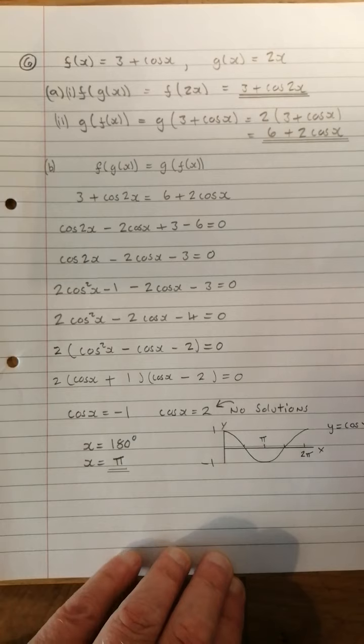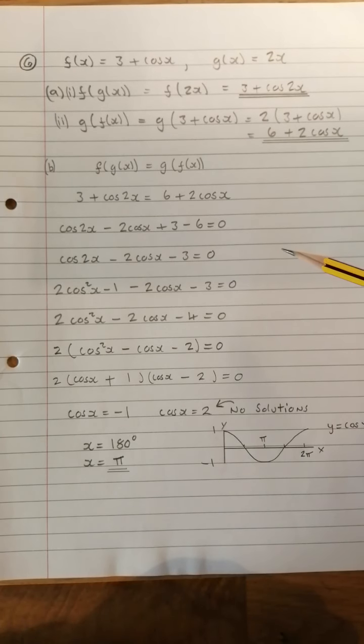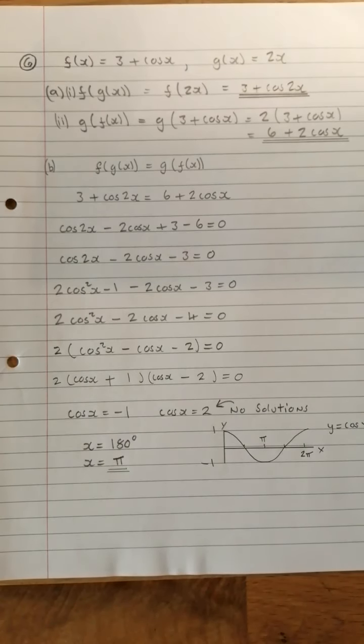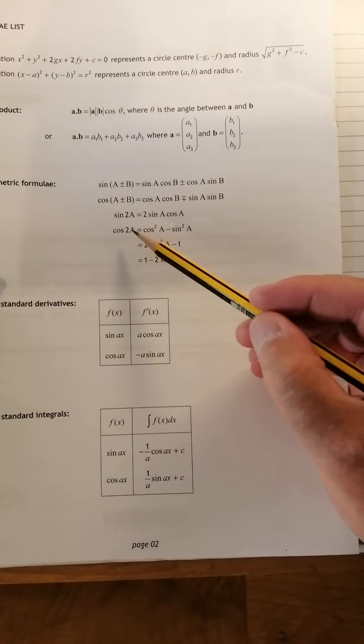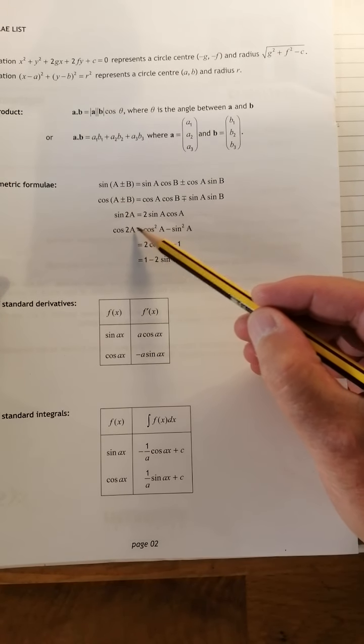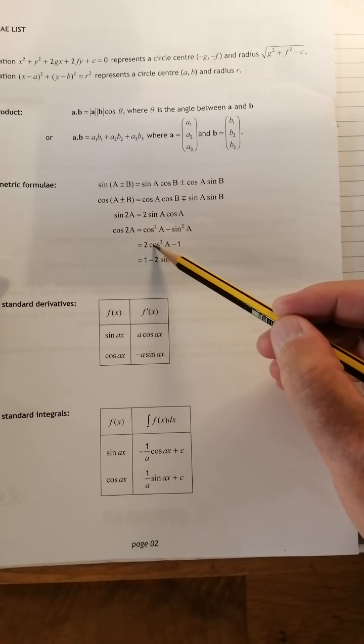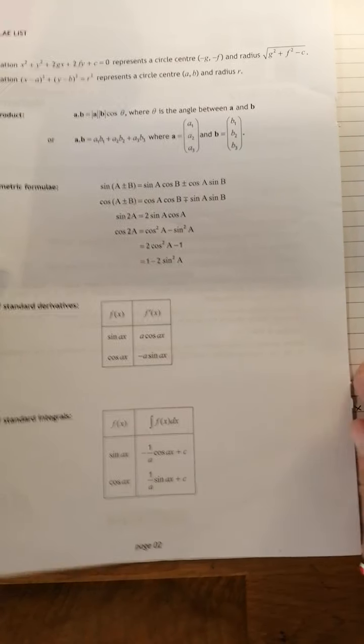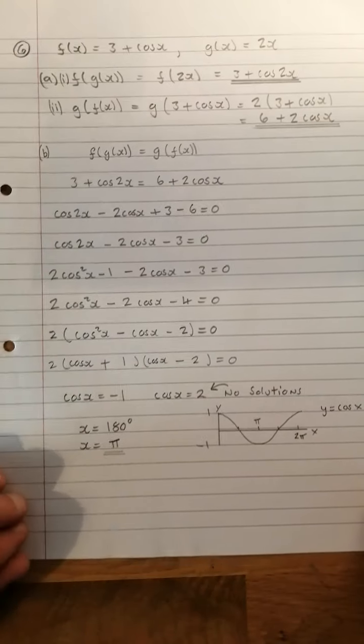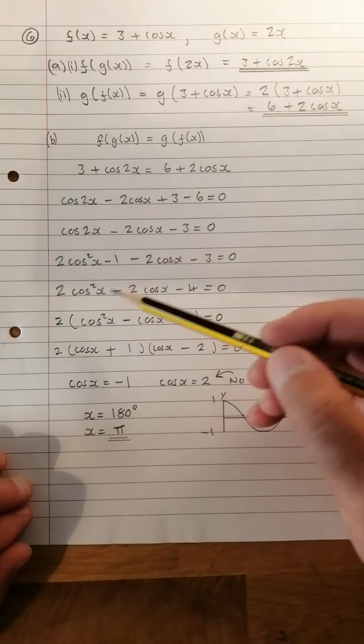This tidies up to cos 2x minus 2 cos x minus 3 equals 0. Now hopefully you know what cos 2x is, it may be in your head. If you don't, you can look at your formula sheet. We have cos 2a, that's how it's presented there, 2 cos squared a minus 1. So cos 2x is 2 cos squared x minus 1.